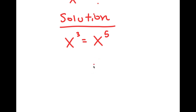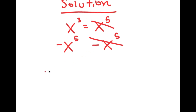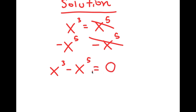What I'm first going to do is subtract x to the power of 5 on both sides. These two cancel out, and I get x to the power of 3 minus x to the power of 5 is equal to 0.